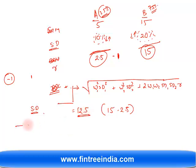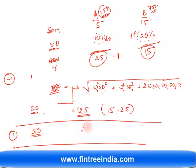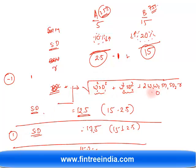Now calculate portfolio standard deviation when the correlation coefficient is plus one: it is simply the weighted average, so 15 + 2.5 = 17.5%. When correlation is zero, there is no shortcut — you solve only the first two terms since the third term becomes zero, giving approximately 15.2%. The conclusion: if correlation is negative, it automatically pulls down the standard deviation of the portfolio.